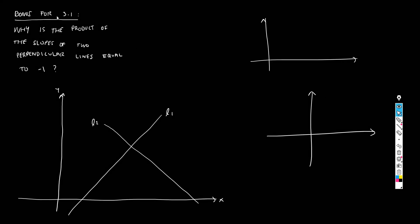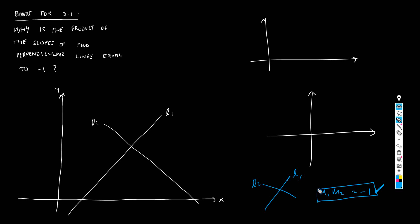Hello everyone, this is a small bonus for lesson 3.1. It's a question that Julieta from group 4 asked: why is the product of the slopes of two perpendicular lines equal to minus 1? That was the test we used to know whether two lines were perpendicular — if m1 times m2 equals minus 1, then those two lines are perpendicular. But why is this so?